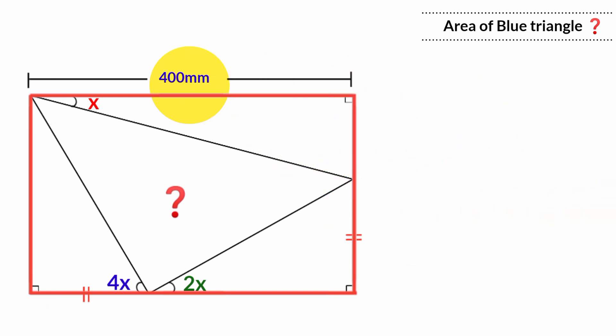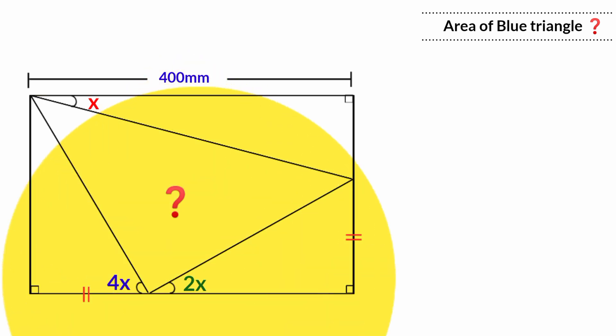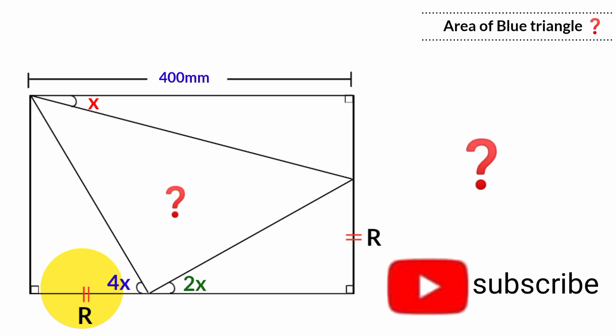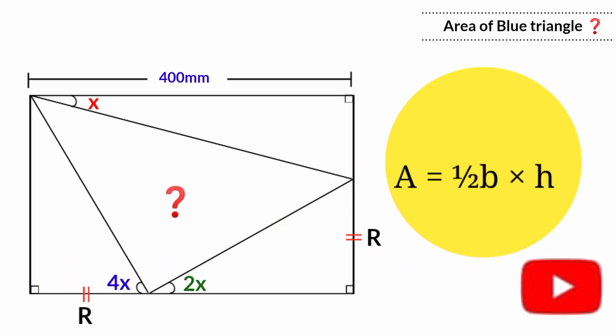We have this side here to be 400mm in length. We can see that this side and this side are equal in length — let's label them R. So how can we calculate the area of the blue triangle? The formula for the area of a triangle is half base times height. But what are the base and the height? We don't know — we don't even have the length of any of its sides.